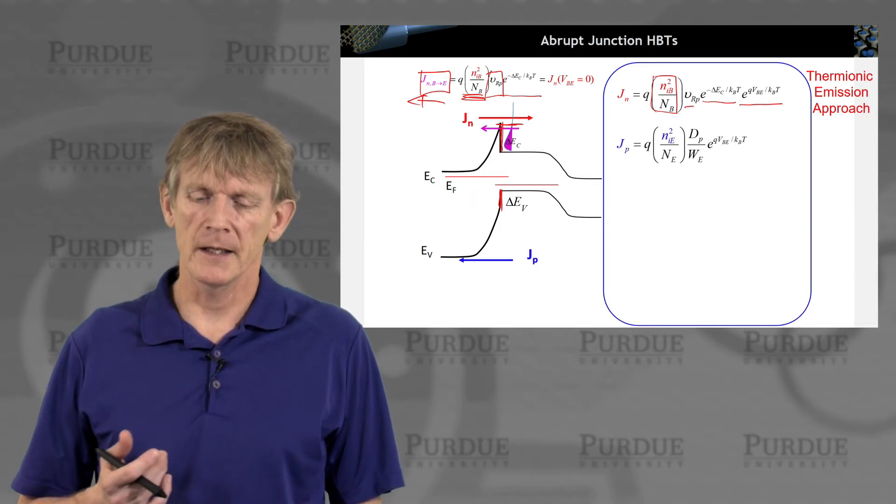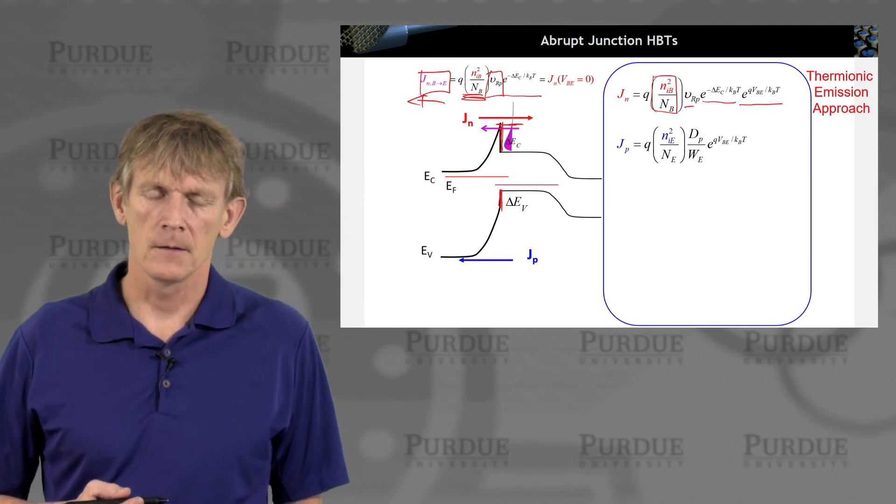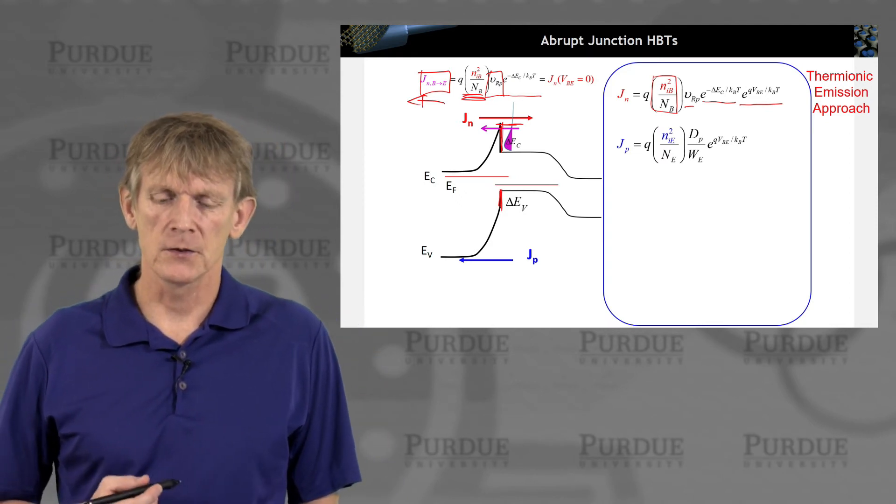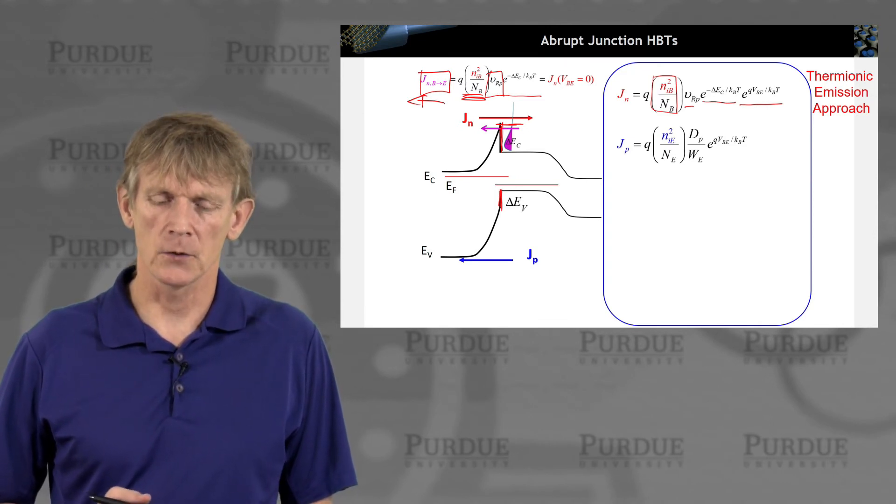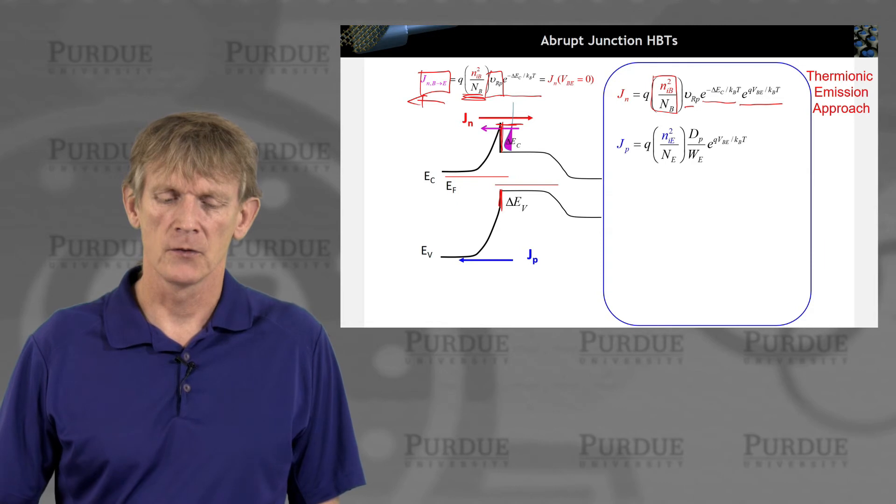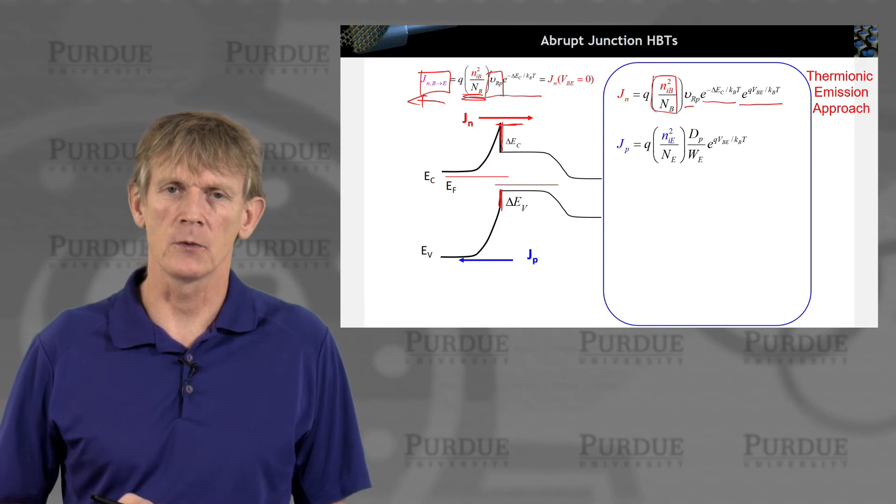For the holes, nothing has changed. Here it's a smooth junction. We can just use the normal expressions we had before from drift diffusion. So no change here for the junction flow for JP going from right to left.